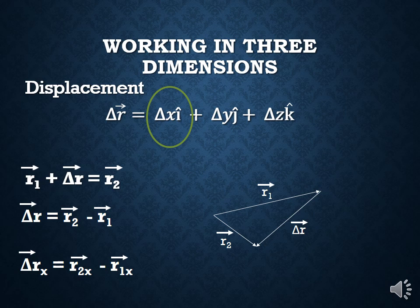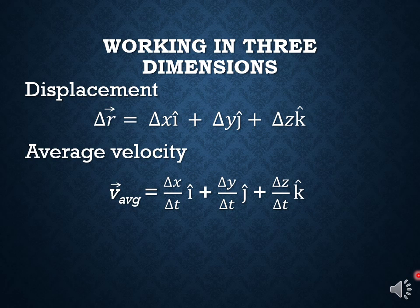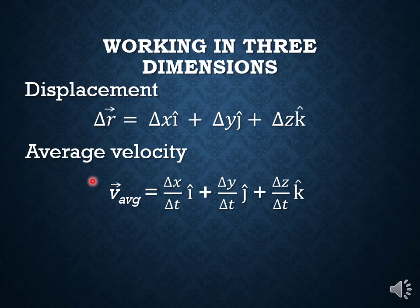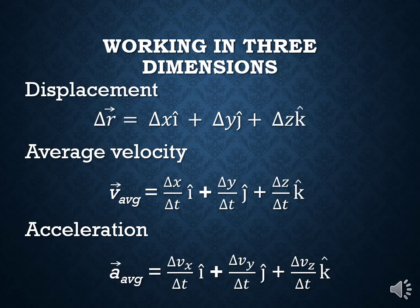To find velocity, we take a component of velocity in each of the three cardinal directions. We divide that displacement by the time delta-t — which is the same for all components — representing how long it took the particle to move from R1 to R2. This gives us average velocity. We could also find instantaneous velocity by making delta-t as small as possible. Finally, if that velocity was changing, we could find how much it changed in x, y, and z over a unit of time to make an average acceleration vector as well.